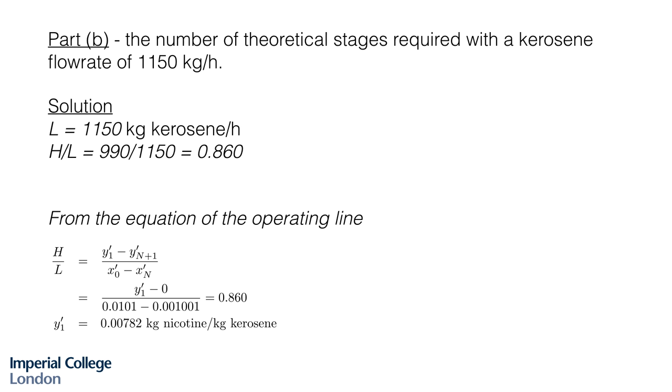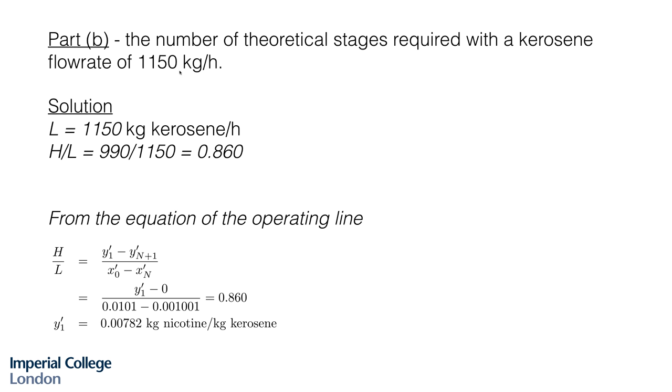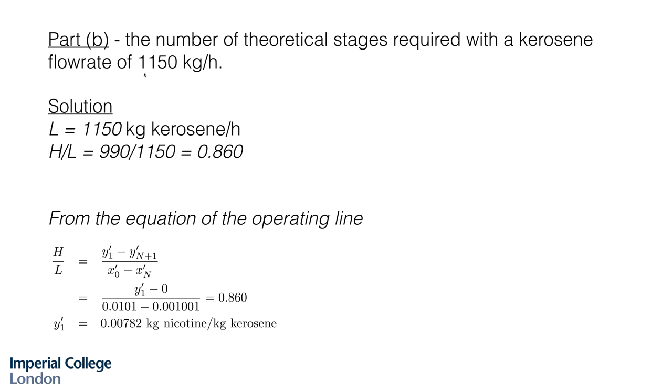Moving on to part B, we are asked to calculate the number of theoretical stages required with a kerosene flow rate of 1,150 kilograms per hour. Note that this is larger than 969. So we have a larger solvent flow rate now. If this number was smaller than our minimum solvent flow rate, it would probably indicate that we'd made a mistake calculating the minimum, because you cannot use a solvent flow rate lower than that minimum and still achieve that final specification of 0.01%.